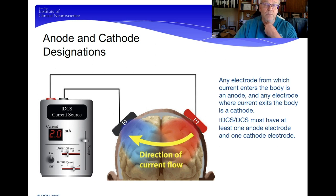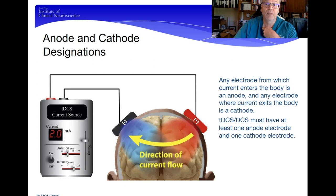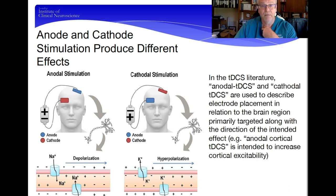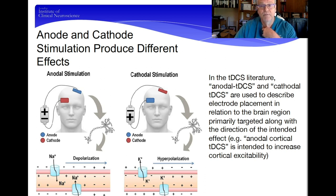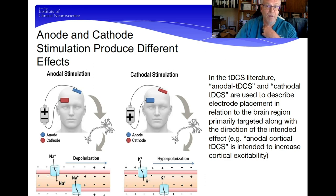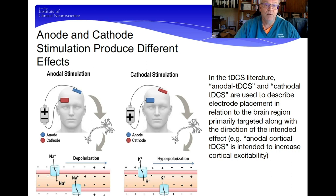Direct current requires at least one electrode on the head, and virtually all tDCS treatment uses two or more electrodes on the head. In the literature, you'll see terms like anodal tDCS or cathodal tDCS. This means the primary target of stimulation or inhibition is indicated by which electrode is being referred to. Anodal tDCS means the target being stimulated is under the anode — that is the primary target.